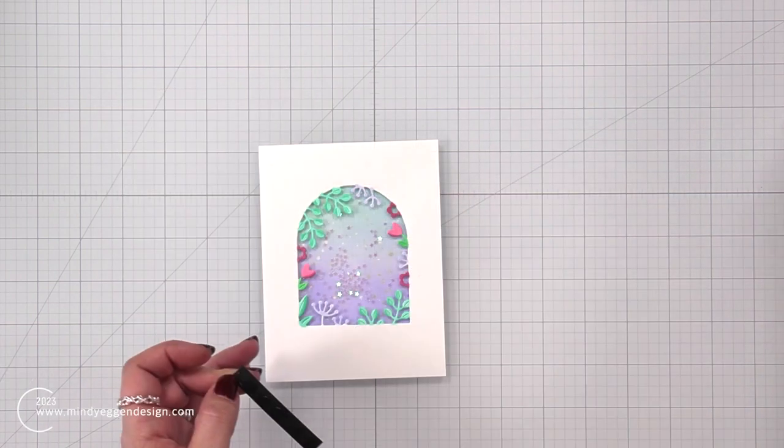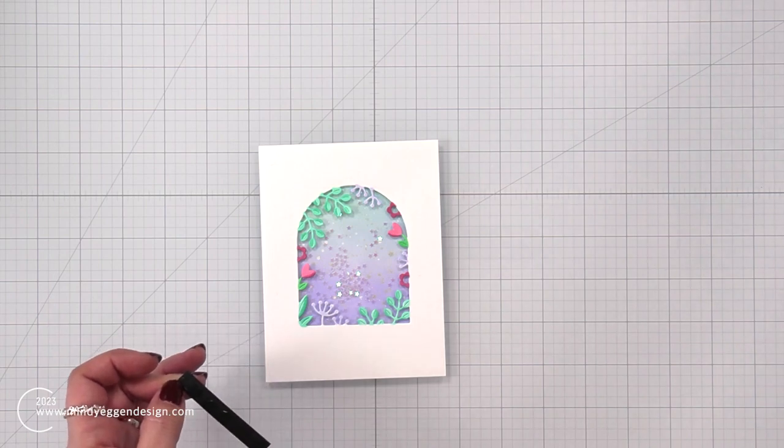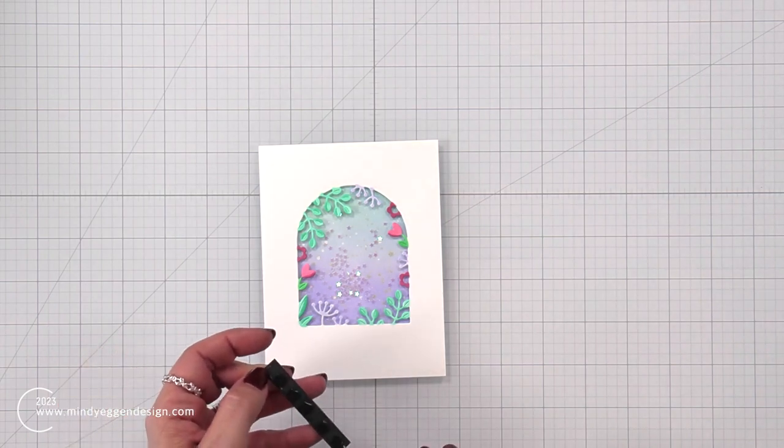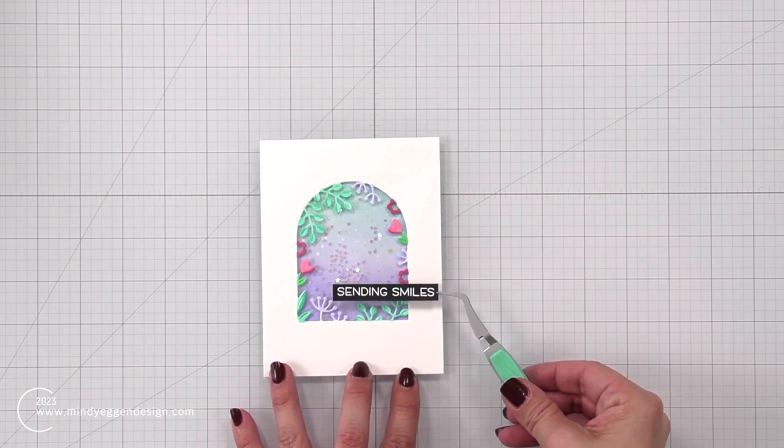So I trimmed that down into a thin strip and I backed it with another piece of thin black cardstock and also some thin black foam squares. And I'm adding that to the bottom of my card.